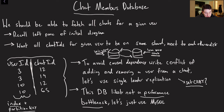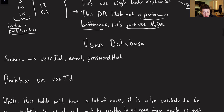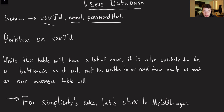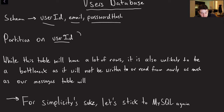Single-leader replication ensures our causal dependencies are consistent, and it's probably not a performance bottleneck for the chat members table. Let's just use MySQL. The same premise applies to the users database — we'll need fields like user ID, email, and password hash. Because there are a billion users this will be a massive table, so we'll partition on user ID. Using a consistent hashing schema, a load balancer can quickly route to the right partition for a given user.